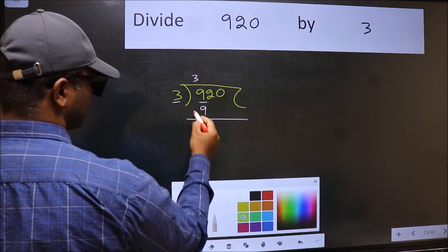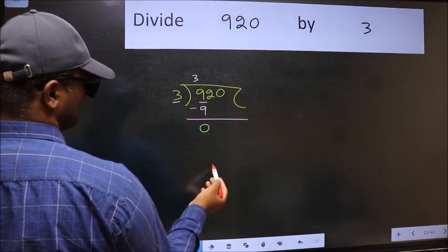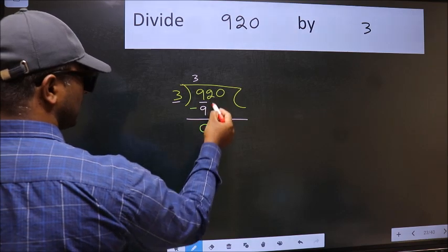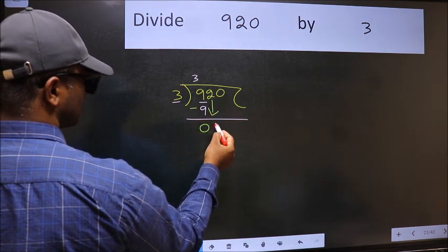Now we should subtract. We get 0. After this, bring down the beside number. So 2 down.